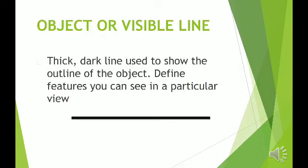Object or Visible Line: A thick, dark line used to show the outline of the object. It defines features you can see in a particular view.